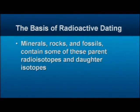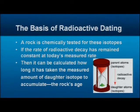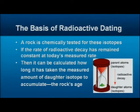Minerals, rocks, and fossils all contain some of these parent radioisotopes and daughter isotopes, which is the basis for radioactive dating. A rock is chemically tested for these isotopes — you get samples, take them to a laboratory, and they measure the amounts. If the rate of radioactive decay has remained constant at today's measured rate, you can calculate how long it has taken for the measured amount of daughter to accumulate, and that's the rock's age.